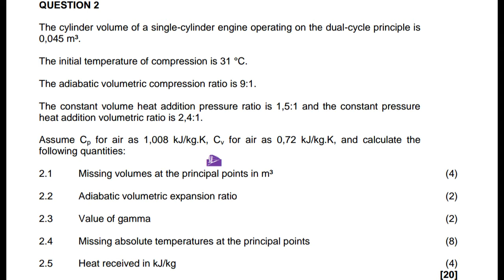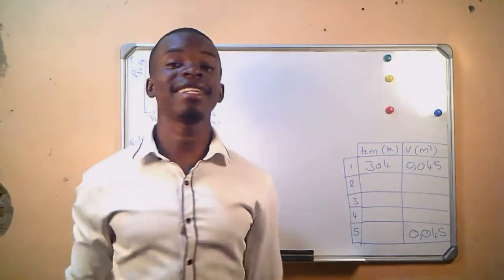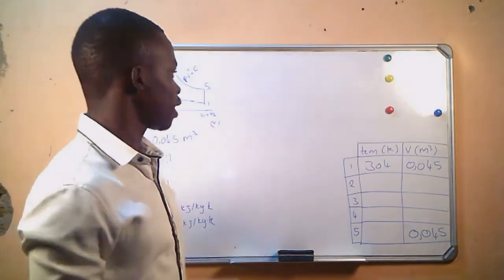Question number 1: missing volumes at the principal points in cubic meters. Question number 2: adiabatic volumetric expansion ratio. Question number 3: value of gamma. Question number 4: missing absolute temperatures at the principal points. And question number 5: heat received in kilojoules per kg. This is the information that we are given.